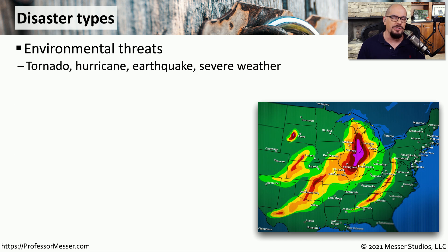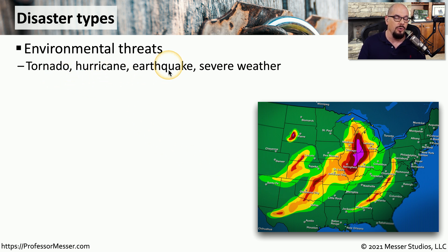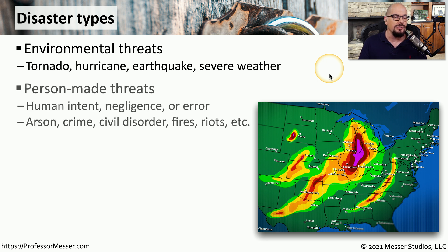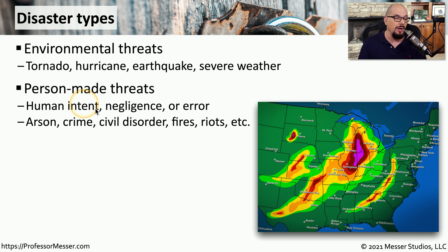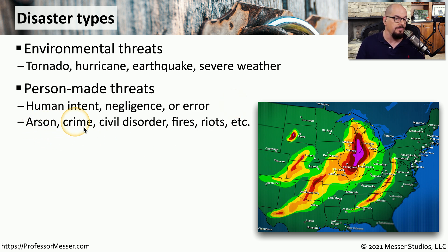When we talk about risk to an organization, we also have to talk about disasters, and there are certainly environmental threats wherever you may be. This could be tornadoes, hurricanes, earthquakes, or even just severe weather. There might also be threats created by a person — this might be human intent where someone is trying to bring down your systems, or perhaps somebody simply clicked the wrong button and through negligence or error caused all the power systems to turn off. These person-made threats could also be more severe, such as arson, crime, and fires.